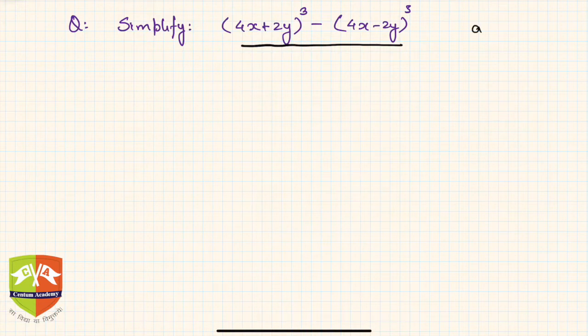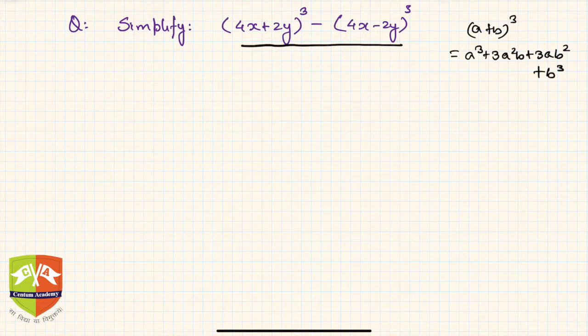a plus b whole cube is equal to a³ plus 3a²b plus 3ab² plus b³. And similarly a minus b whole cube, because if you see there's a minus sign here, a minus b whole cube will be a³ minus 3a²b plus 3ab² minus b³, correct.